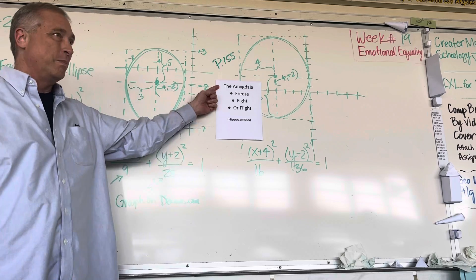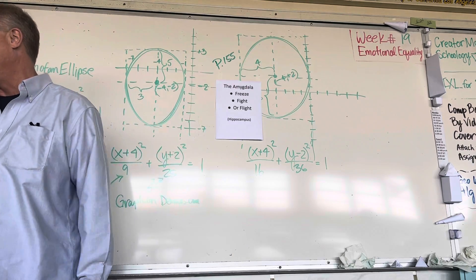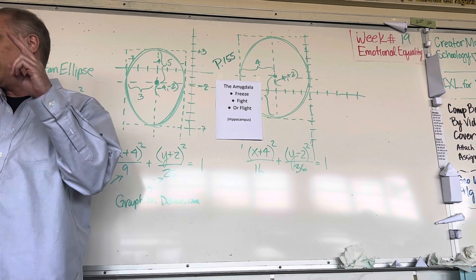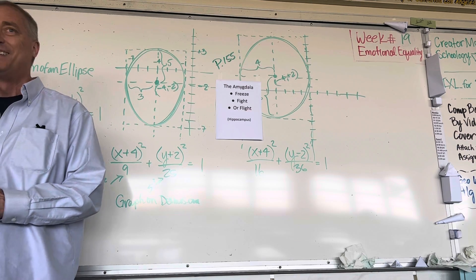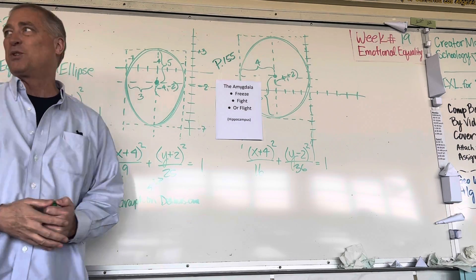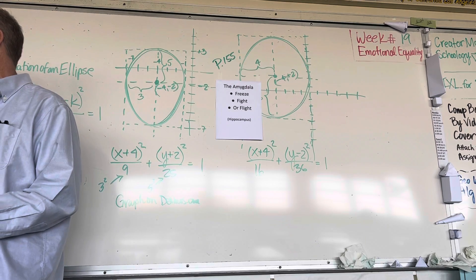So my understanding is the amygdala is the old brain from way back in the days when we were dinosaurs. I don't know. From way back then. The hippocampus is your new brain. That's where you actually think and reason.